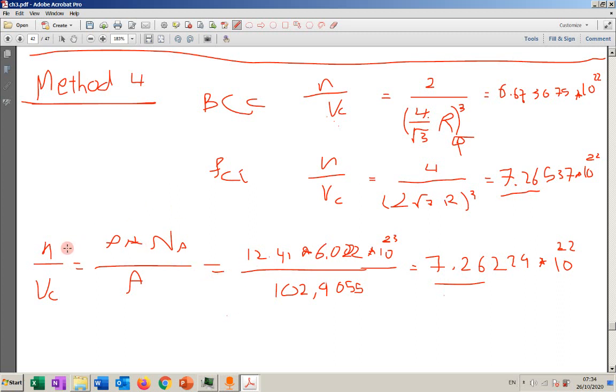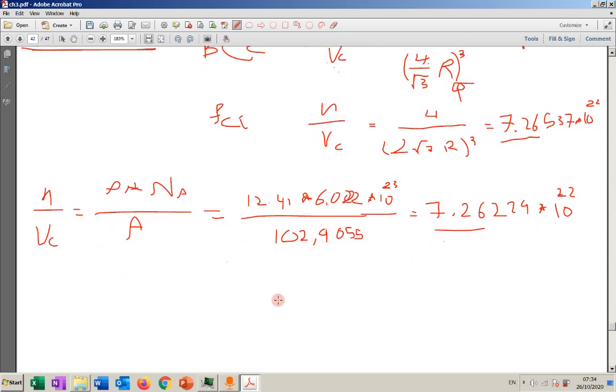Then there's another way that you can see if it is crystal directly. You will find this one, and since you know for BCC and FCC the numbers, you say okay, this is FCC crystal structure. That's another way to do it. I prefer the first one or the second one.